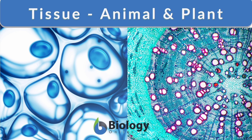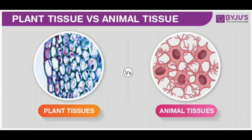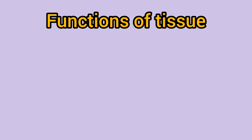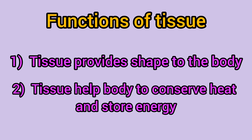Tissue is a group of cells that have similar structure and function together as a unit. A non-living material called the intracellular matrix fills the space between the cells, which may be abundant in some tissues and minimal in others. In biology, tissue is defined as a group of cells that possess a similar structure and perform specific functions. The general functions of tissue are to provide shape to the body and help the body conserve heat and store energy.